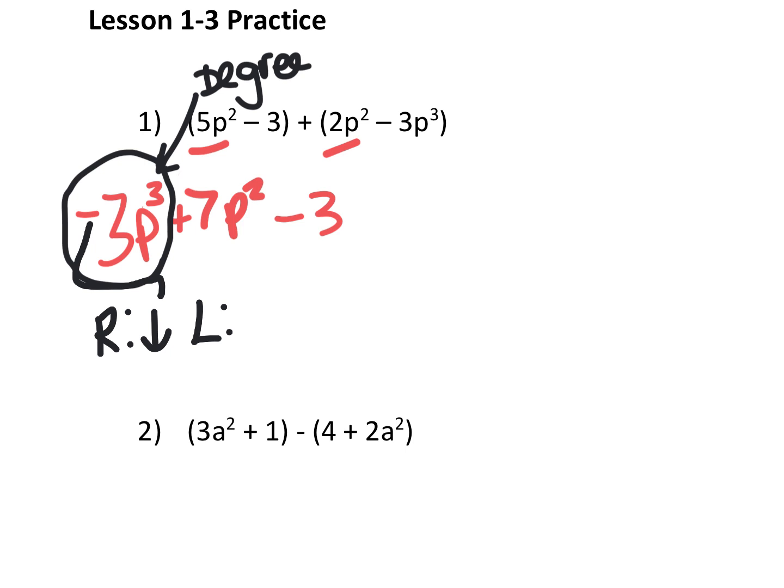On the right, it's going down because of this negative here. So I put a down arrow. On the left, it's going up. Because this is odd, that means that they have to be different. Now I'm done with problem one.